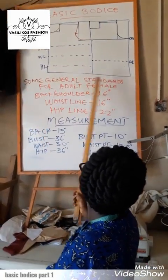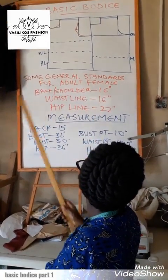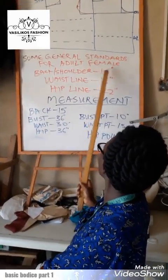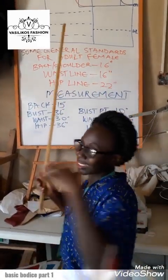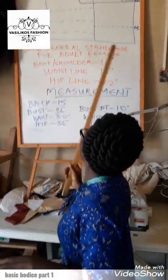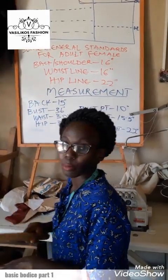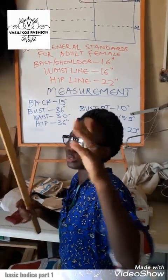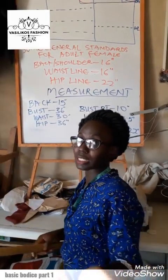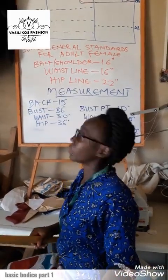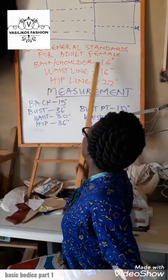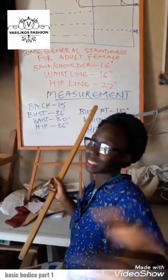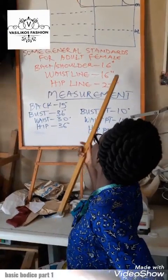We have some general standards for adult females, for the body of a female. We have the back of the shoulder — the general standard is supposed to be 16 inches. But it doesn't mean that for everybody you'll be using 16 inches, because body sizes and shapes vary. That is the standard. Then we have the waistline — normally from the shoulder to the waistline, the generally acceptable standard is 16 inches.